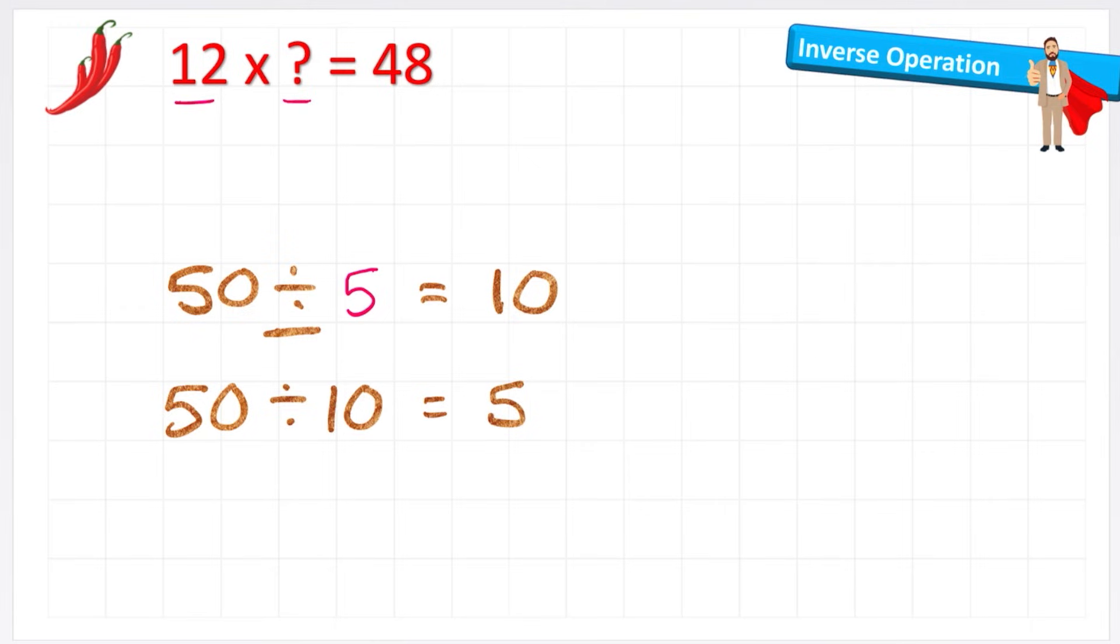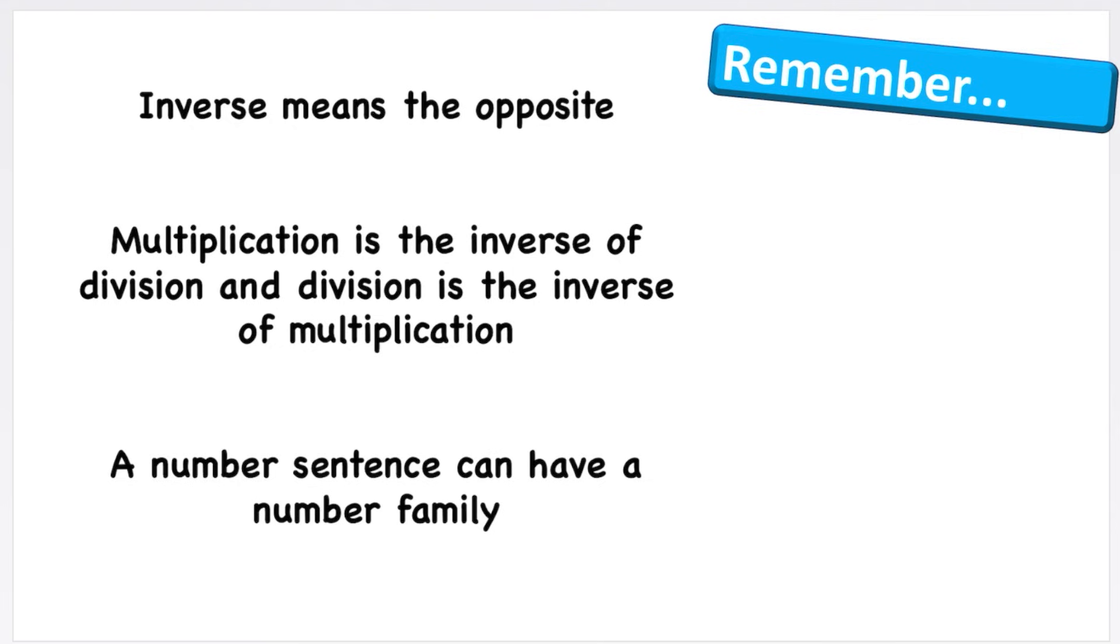Let me quickly get my next two number sentences. And I can see that 50 is the largest number. So if I'm now going to multiply, that number needs to come to the end. And I could work out that 5 times 10 equals 50. But also flip those numbers around, 10 times 5 equals 50. These are my number family. And there you go. That is using the inverse operation to help you solve both missing number questions, and also being able to just check your answers and make sure you've got the correct answer.